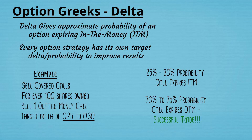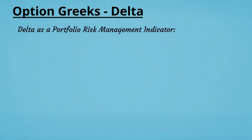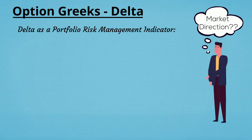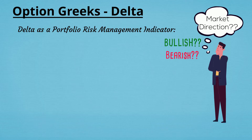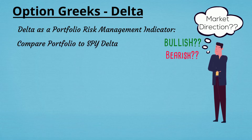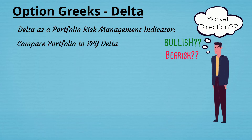Check out that other option video — there are three really good strategies in there. Now that we know how to use Delta for options, let's look at one last use of Delta as a risk management tool. Anytime you're trading you always have to have some sense of how bullish or bearish you are on the overall market — for example looking at the SPY. There are various indicators you can use to determine market direction, but that's outside the scope of this video.